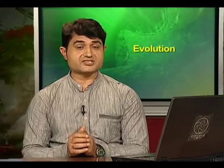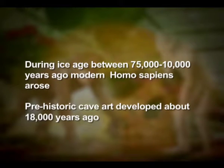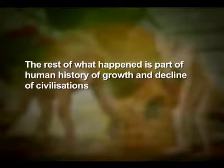They used hides to protect their body and buried their dead. Homo sapiens arose in Africa and moved across continents, developing into distinct races. During the ice age, between 70,000 to 10,000 years ago, modern Homo sapiens arose. Prehistoric cave art developed about 18,000 years ago. Agriculture came around 10,000 years back and human settlement started. The rest is part of human history of growth and decline of civilizations.